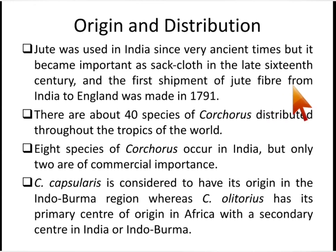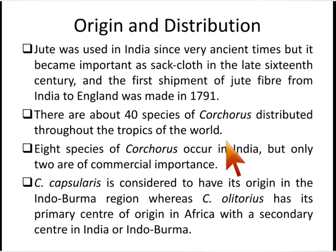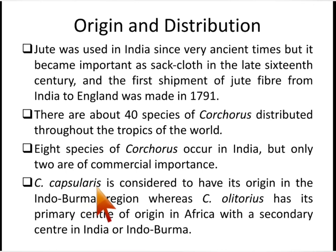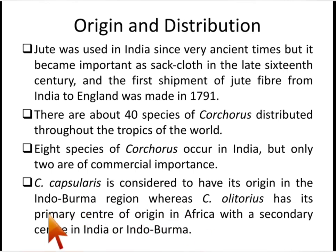There are about 40 species of Corchorus distributed throughout the tropics of the world, and eight species occur in India, but only two are of commercial importance. Corchorus capsularis is considered to have its origin in the Indo-Burma region, whereas C. olitorius has its primary center of origin in Africa with a secondary center in India and Indo-Burma. Jute is the most important bast fiber and among natural fibers is second only to cotton.